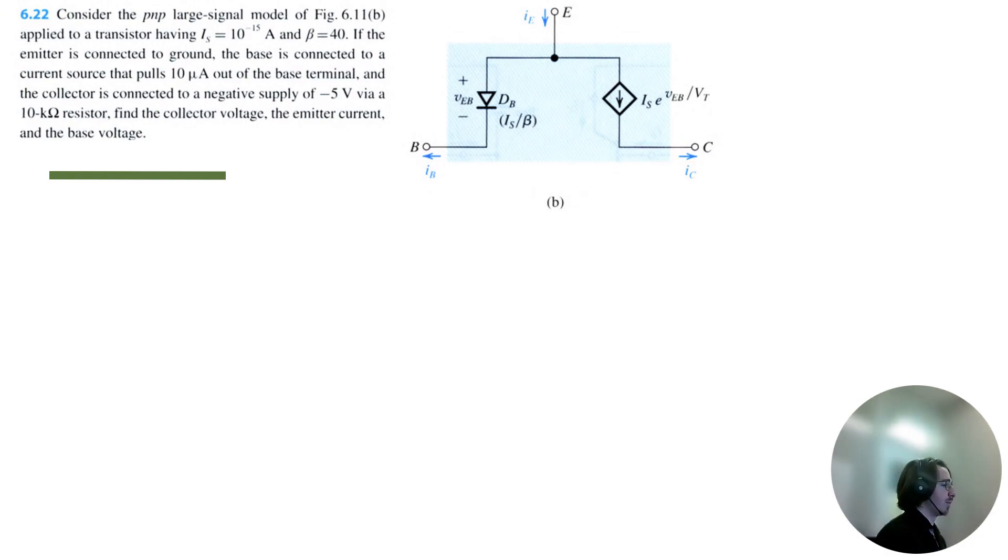So let's start off by drawing this circuit that's being described. I'm going to work from left to right. First we have the base, and it is connected to a 10 microamp source, and it's being pulled out. We have our base terminal, and we will label this as the base voltage. We have this diode, db, and let me label the current to ib. Now, the emitter is just grounded, so that looks pretty easy. So we'll ground right there. This is the emitter, and we're writing the emitter current like this.